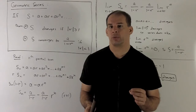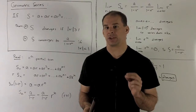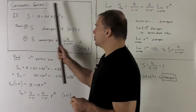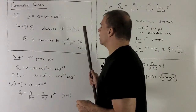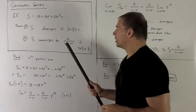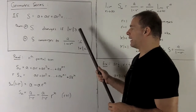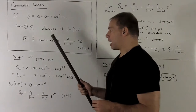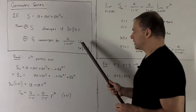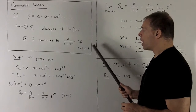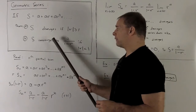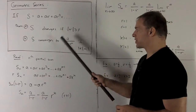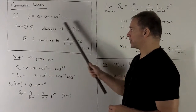These series are very special — we'll get a lot of mileage out of these, so you want to pay attention. If I have a geometric series, two things are going to happen. The series will diverge if I take r, take its absolute value, and that number is bigger than or equal to one. Otherwise, if its absolute value is less than one, s is going to converge to the formula a over one minus r. That's going to be the sum of the geometric series.